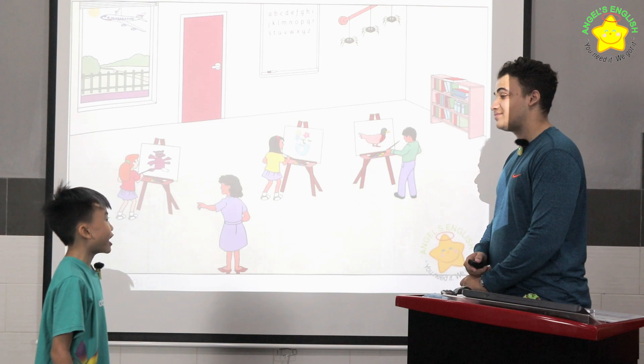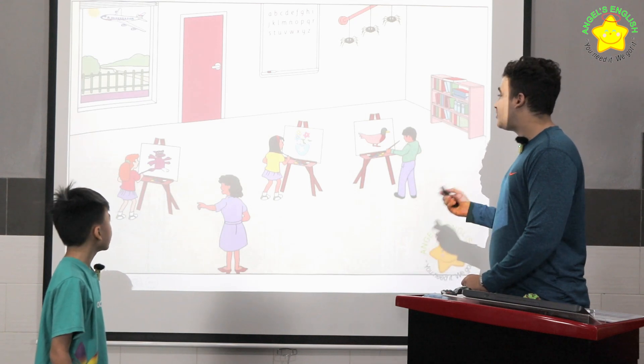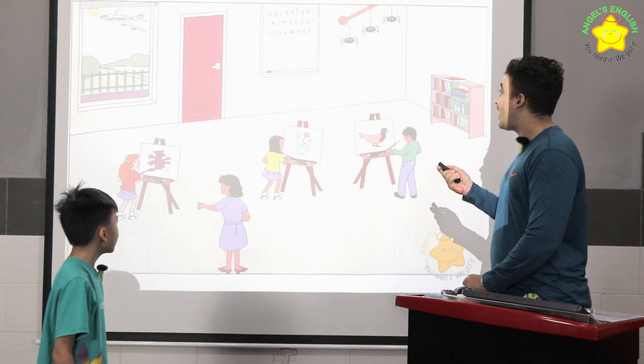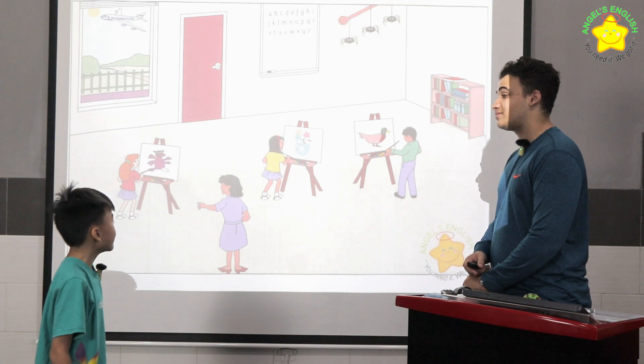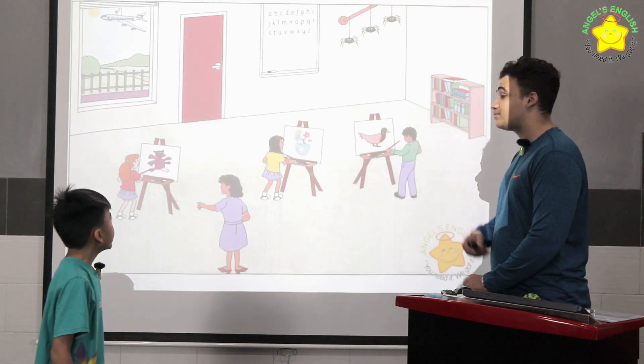Where are they? They're in the classroom. How many people do you see? I can see four people. How many spiders do you see? I can see two spiders. What is on the board? It's alphabet.